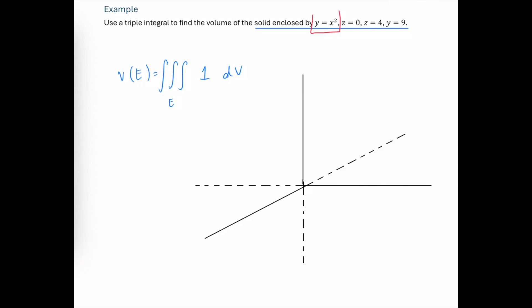So we'll begin with y equals x squared. That's a parabola in the xy plane that is opening in the direction of y. It's missing the z variable, so it's going to be extended up in the direction of z, which turns it into a parabolic cylinder. We're also going to have the xy plane as a lower boundary and the plane z equals four as an upper boundary and y equals nine.